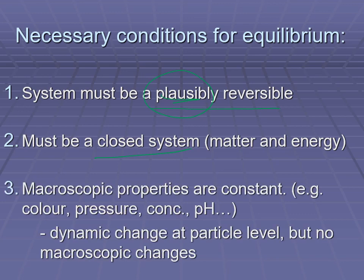Macroscopic changes, based on this, would not be changing. So if you were to measure the pH of this particular system, whatever amount of reactants or products was causing it to have that pH will stay the same. Though the reactants are still becoming the products, because the products are becoming the reactants at the same rate, any observable characteristics of that system will be constant.